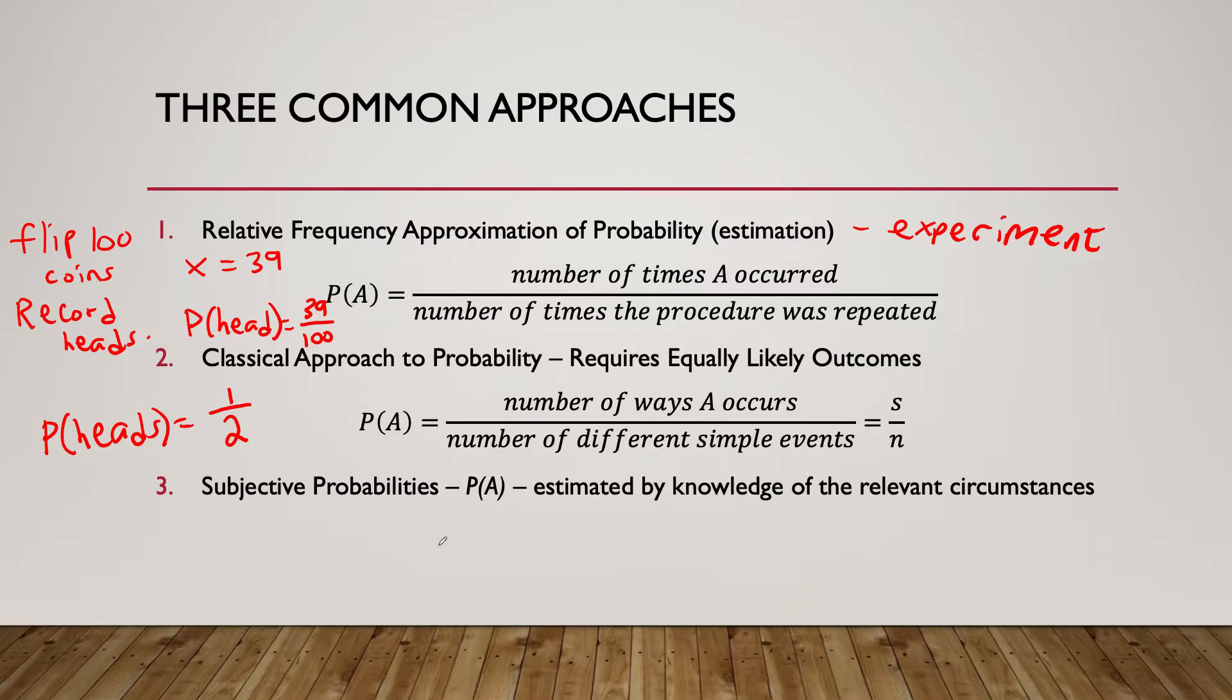The third one is subjective probabilities. P of A is estimated by knowledge of the relevant circumstances. This is basically where we think of a particular event, what might occur. That is not the most scientific way of going about it, and it's certainly not something you would use in a research paper or experiment due to the fact that it's subjective. But this is the way we might think about probabilities in real life. We wouldn't say the probability of this occurring is 5%, we would say it's unlikely to occur as a type of subjective probability.